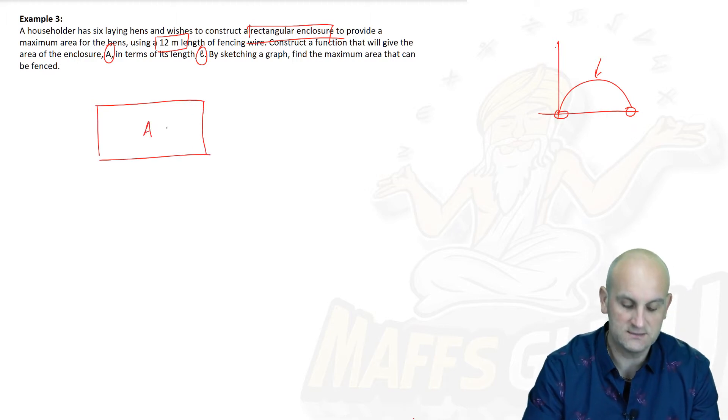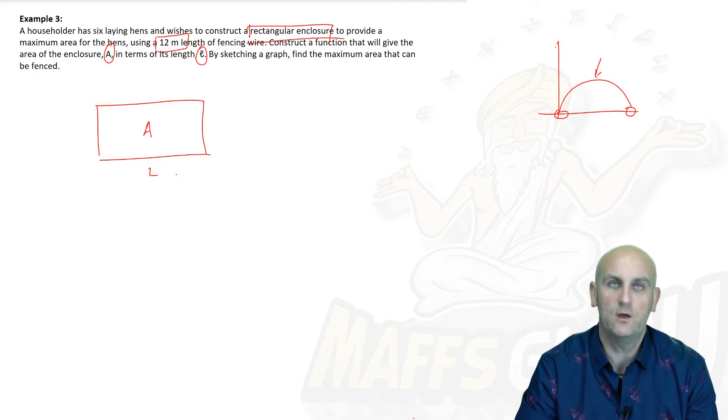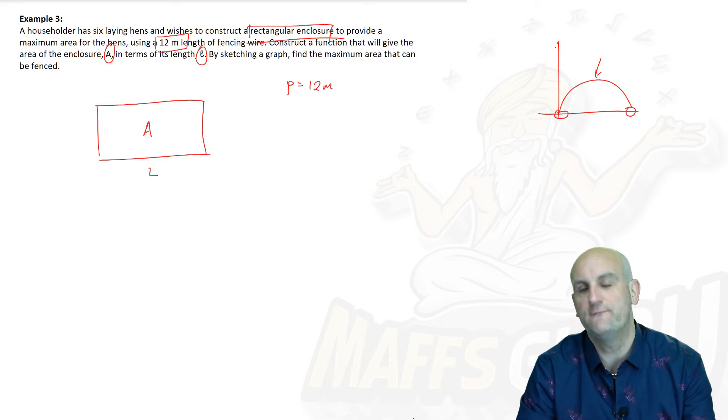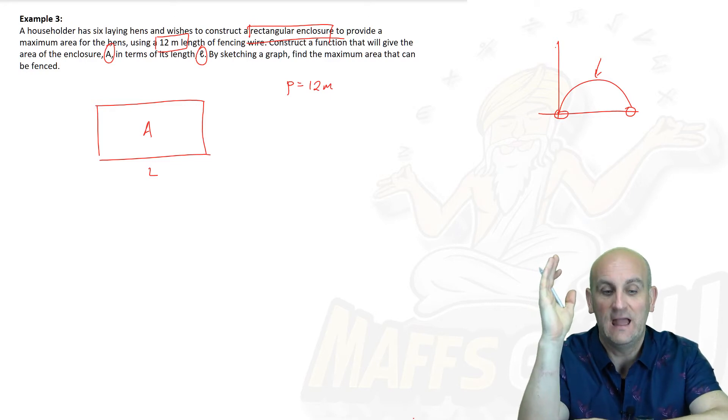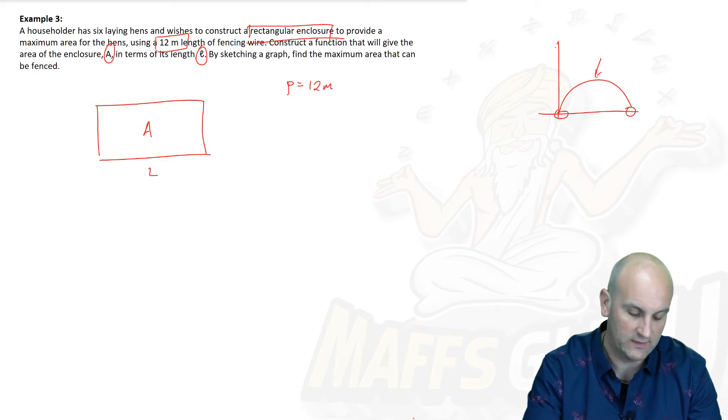First things first. It says that we have a rectangular enclosure. We know the area inside of it is A and we know that the length is given by L. I don't really care which one is the length. I'm going to write it as capital L. So we know the total perimeter of this was equal to 12 meters.